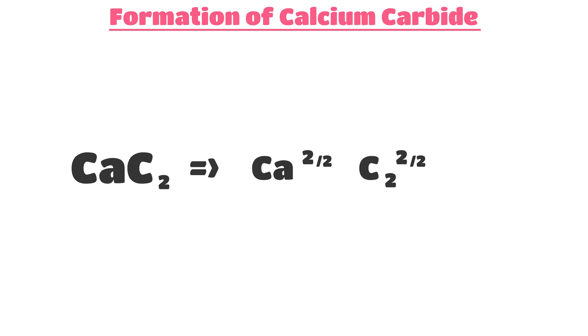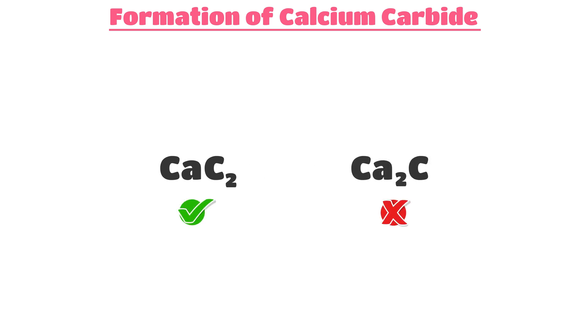Therefore, when we cross multiply the valencies, we get the formula of calcium carbide as CaC2 and not Ca2C.